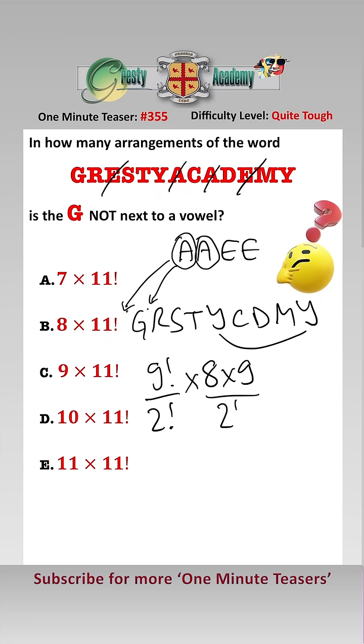Looking at the first E, we now have 11 letters in our chain, so we have 12 spaces of which 10 are not next to the G.